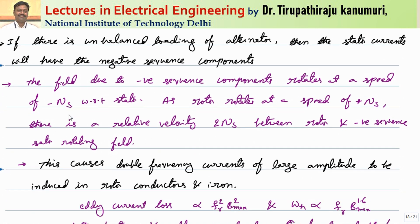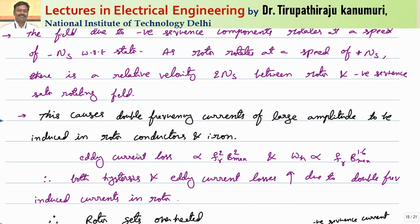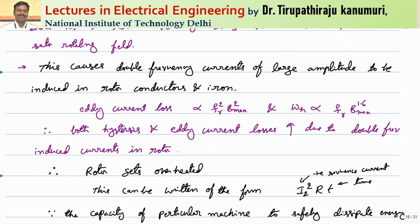To summarize: if there is unbalanced loading of the alternator, the stator currents will have a negative sequence component. The field due to the negative sequence component rotates at minus ns with respect to the stator. Since the rotor rotates at plus ns, there is a relative velocity of 2ns between the rotor and the negative sequence stator rotating field. This causes double-frequency currents of large amplitude to be induced in the rotor conductors and iron.